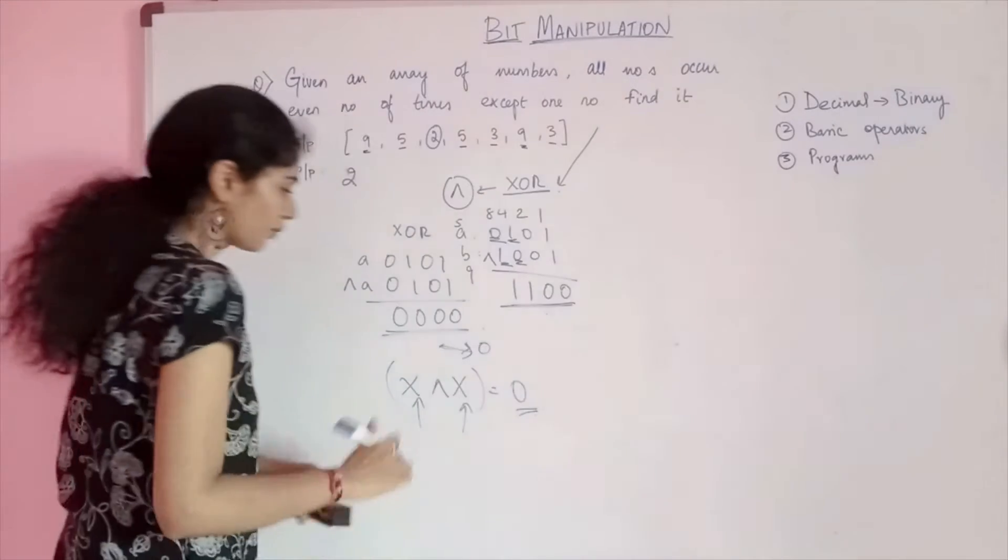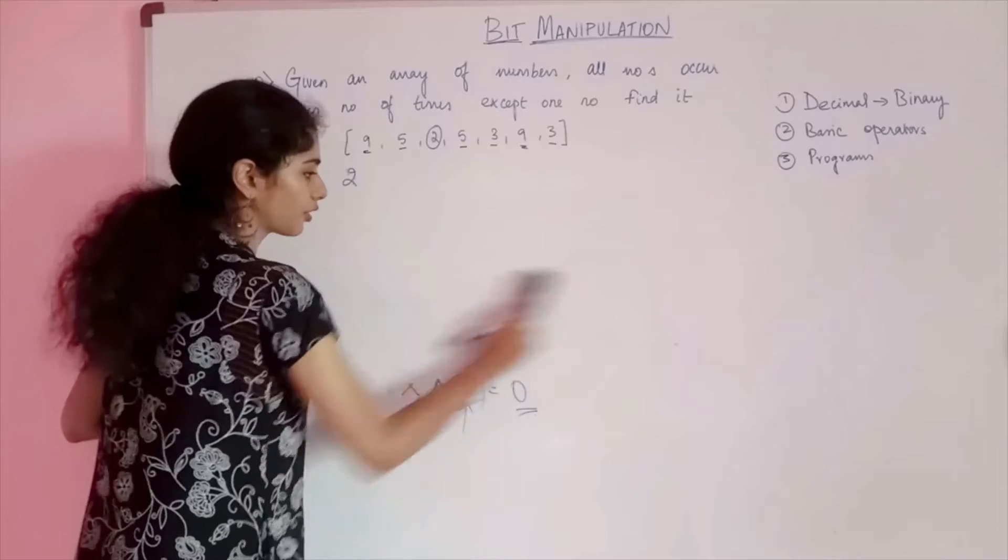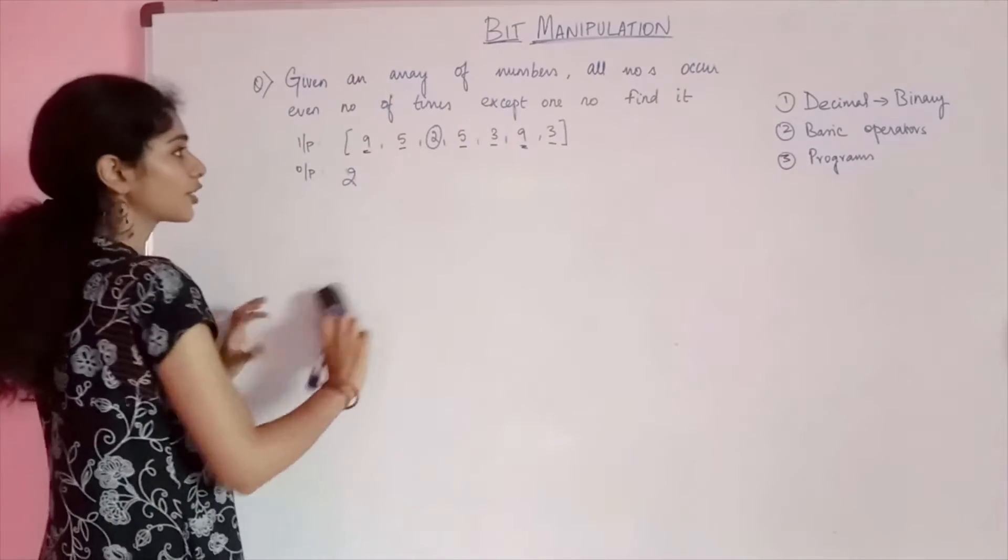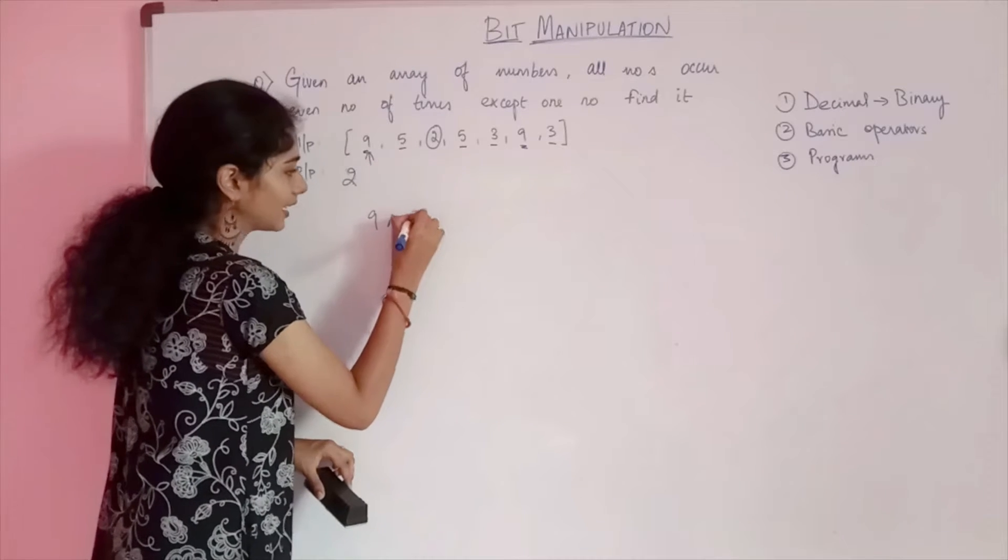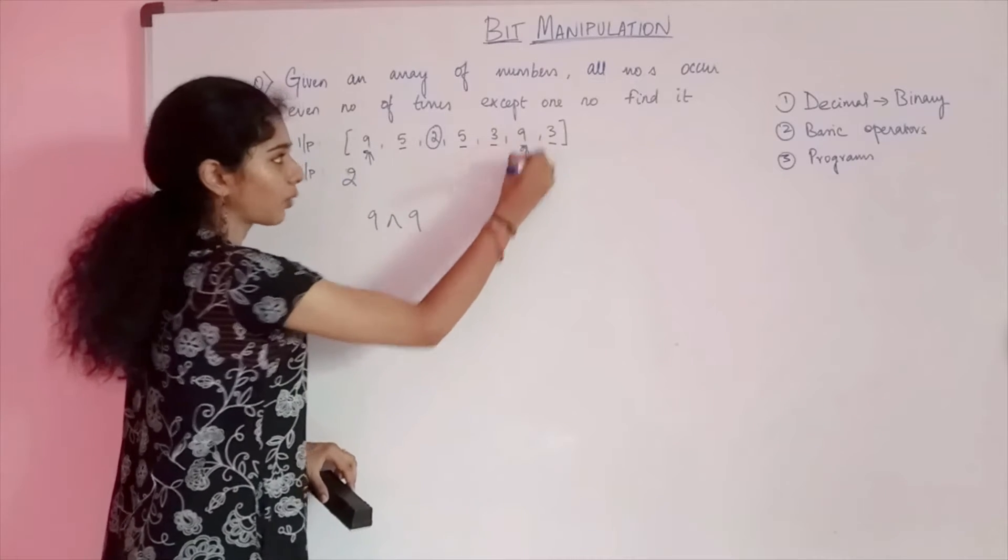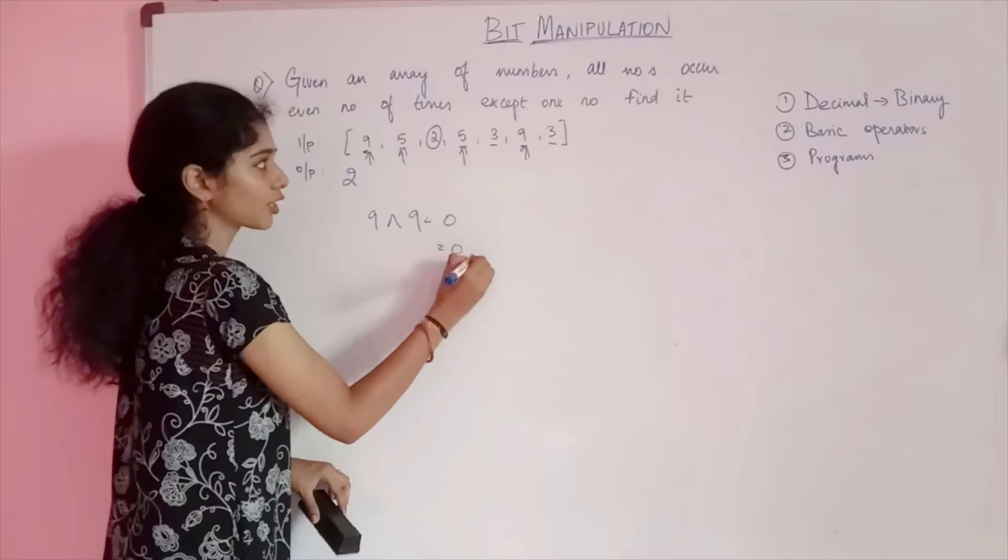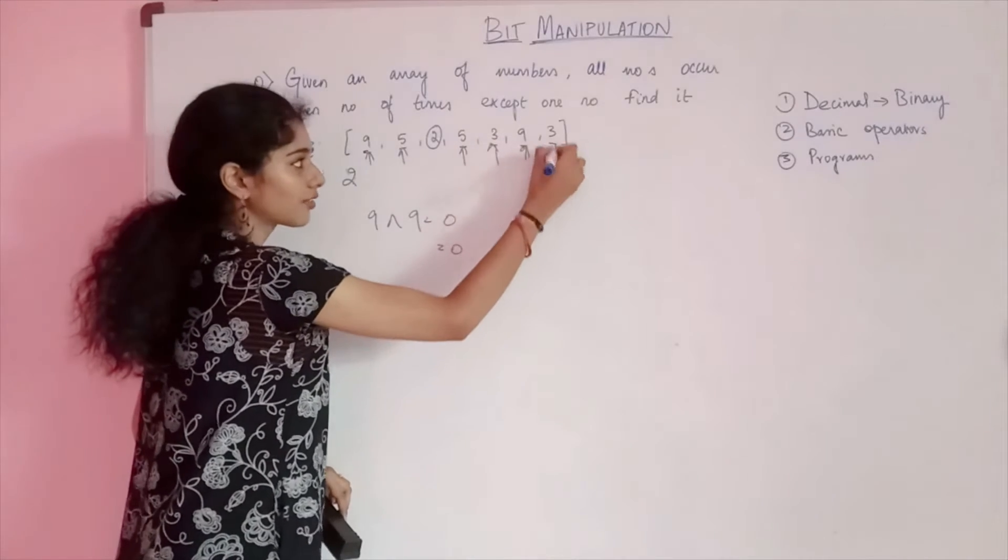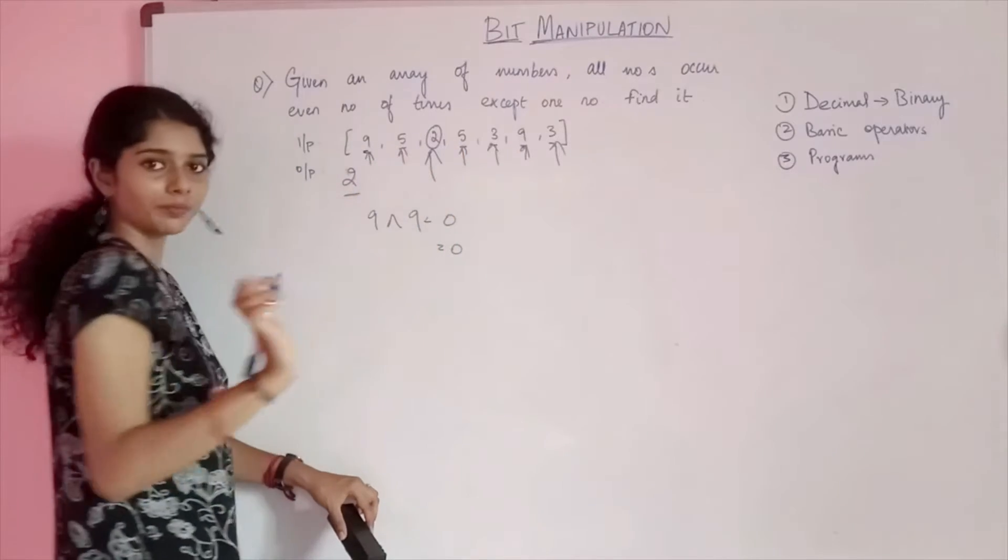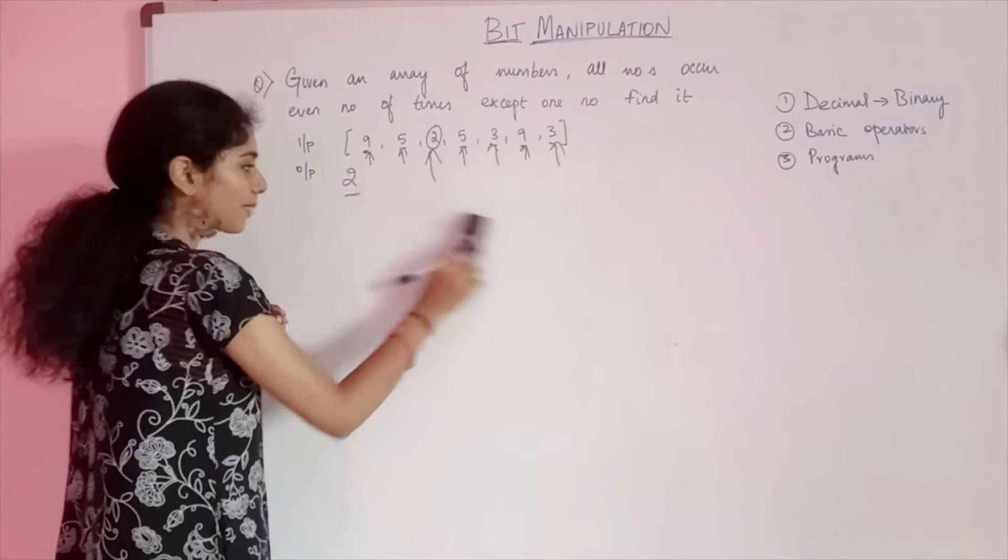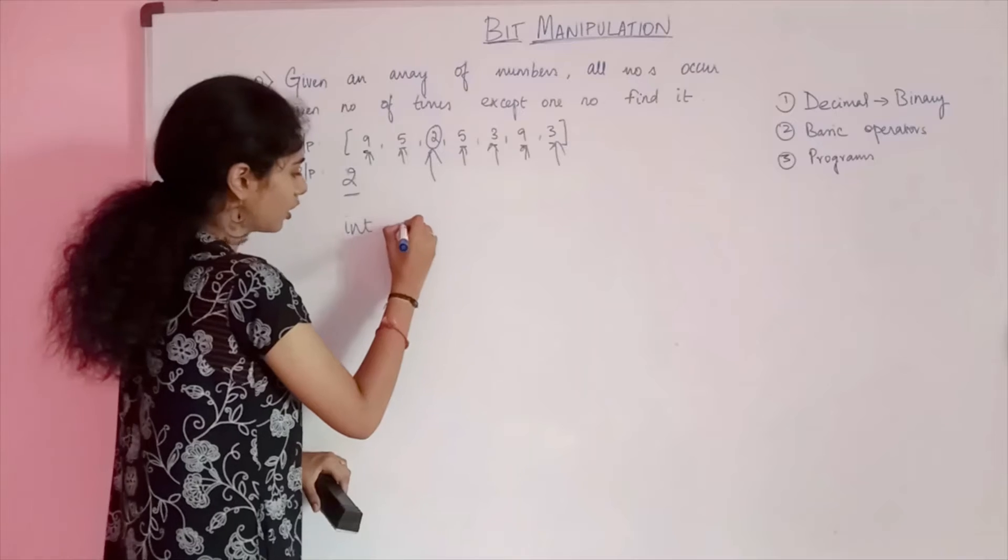We are going to make use of this idea in this question. If I do the XOR operation for every element in the array, what will happen? When this 9 XORs with this 9, you will get an output of 0. Similarly, this 5 XOR with this 5 will give an output of 0. This 3 XOR with this 3 will again give an output of 0. What will be left out? You will be left out with the answer 2.